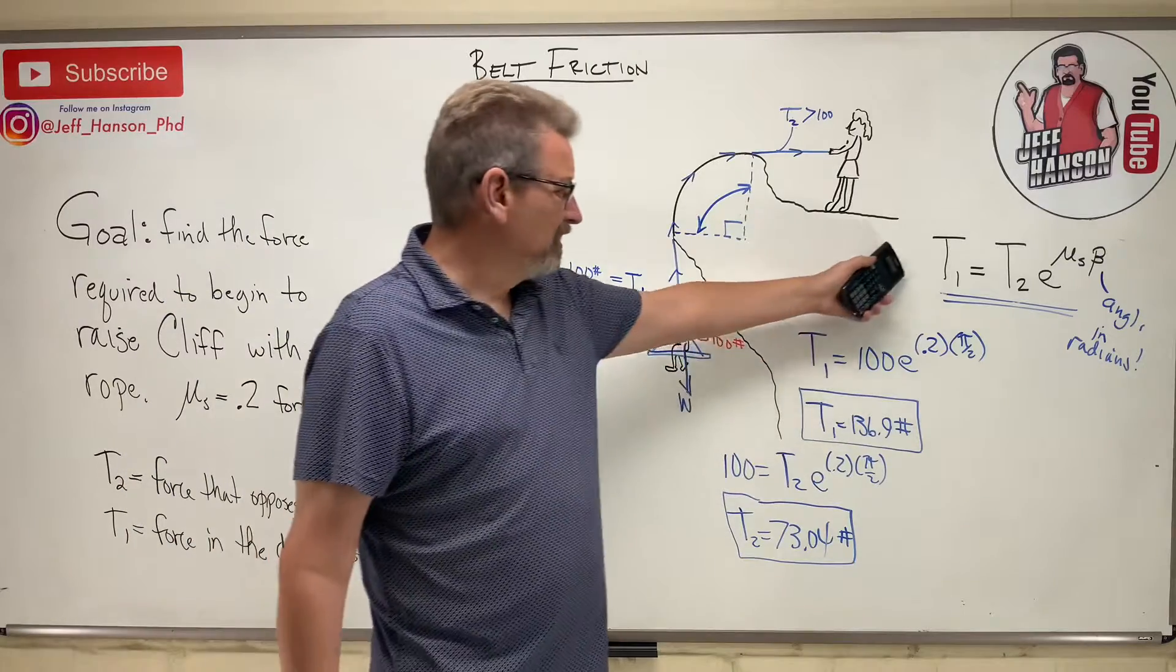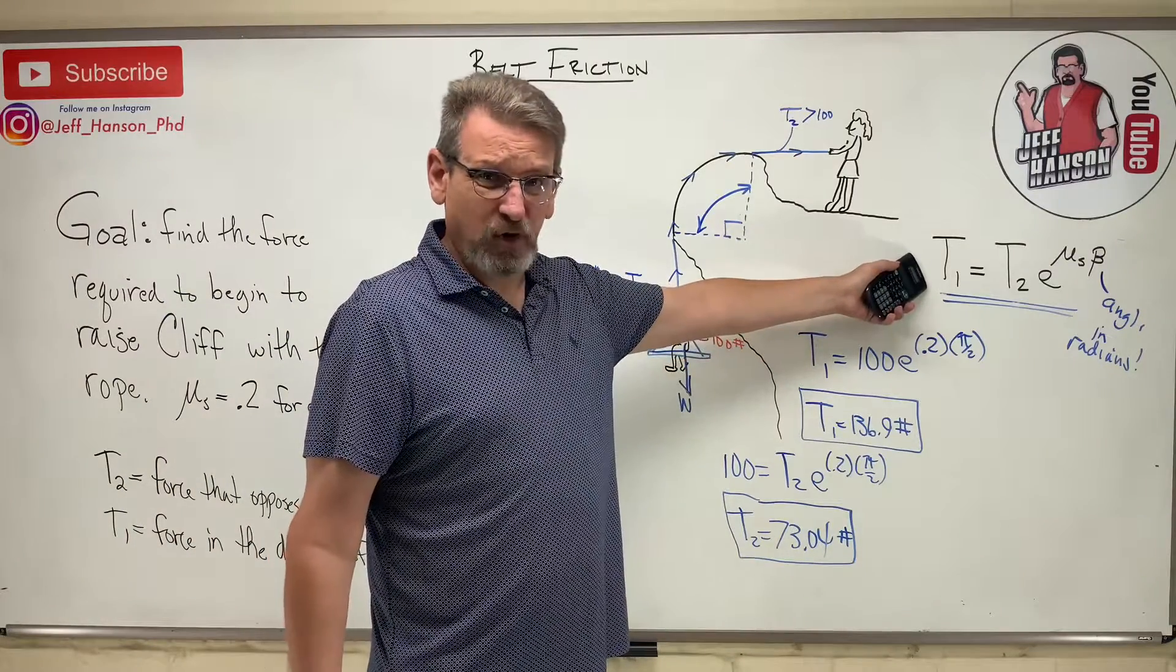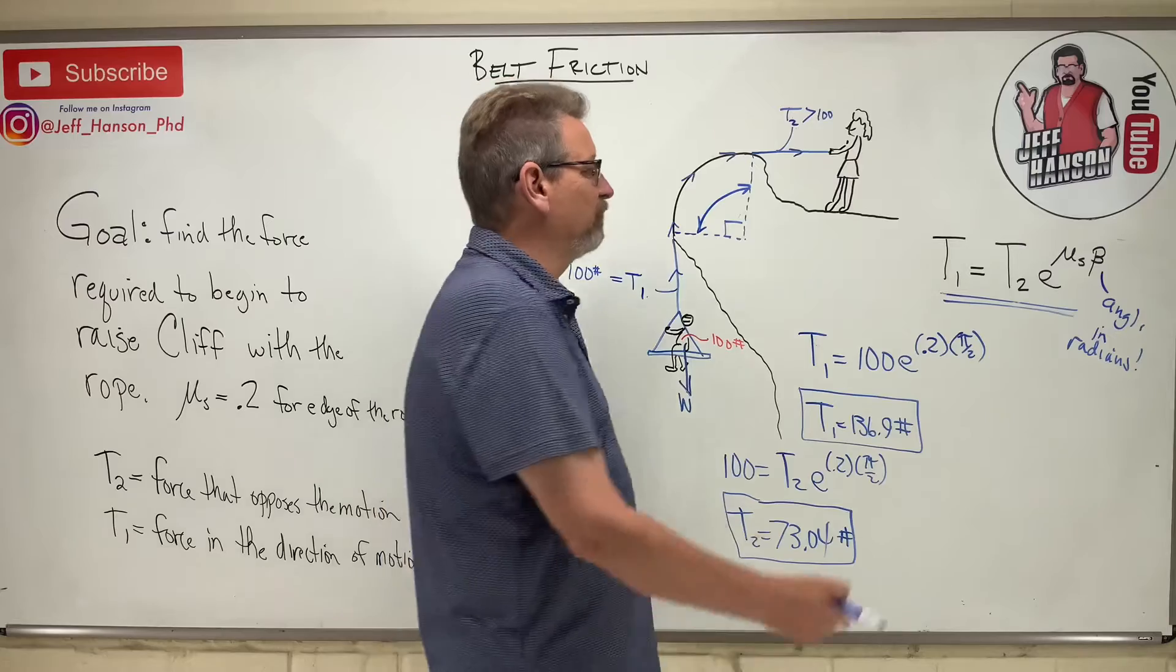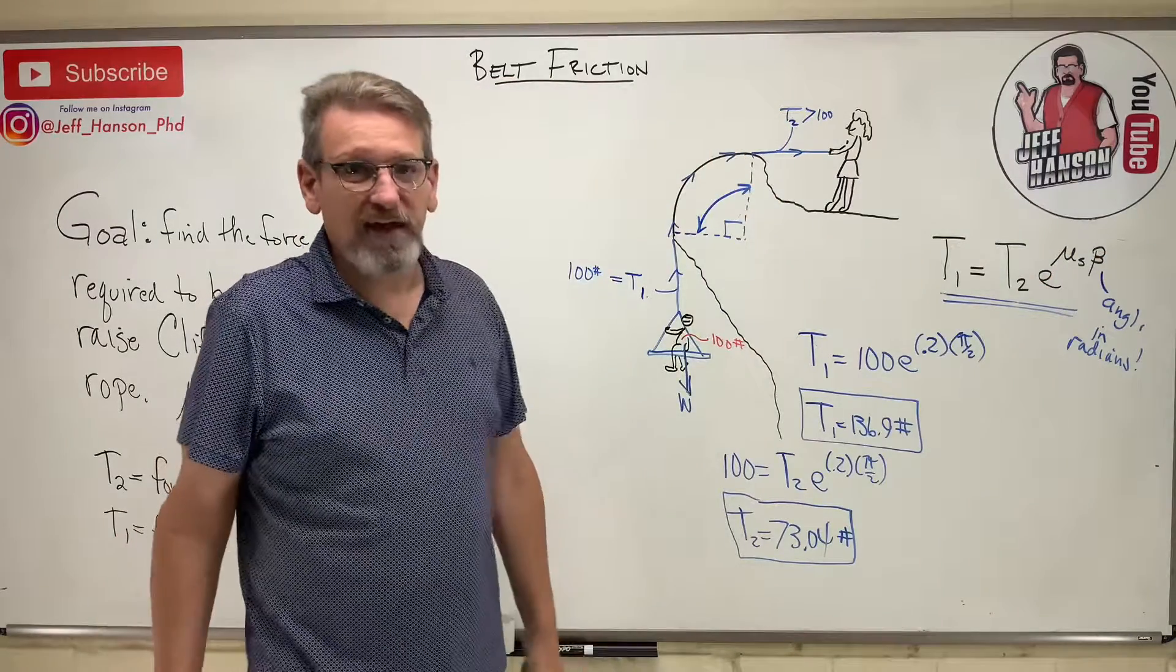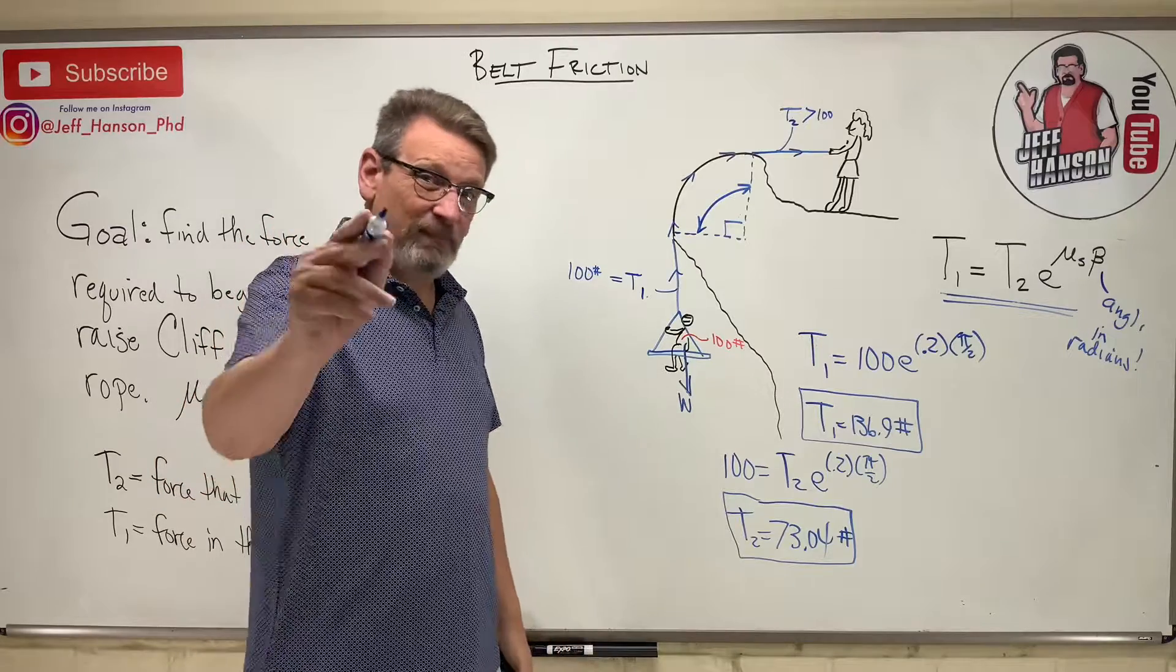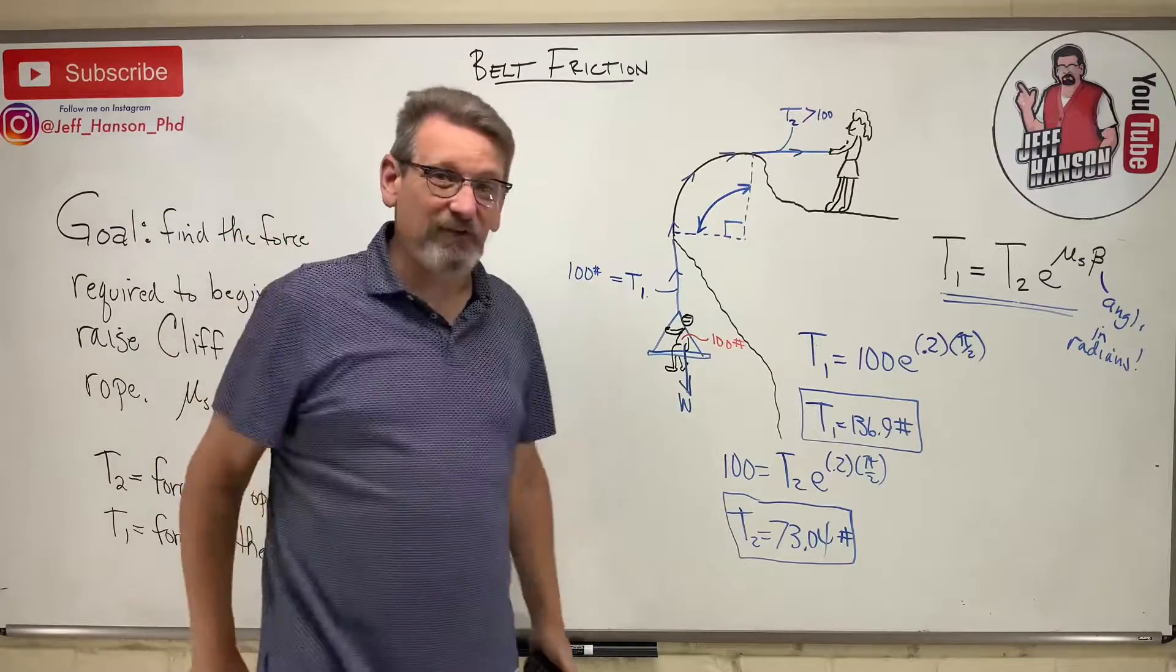So that's how you use the belt friction equation. It's pretty simple. The only trick is remember that that angle right there needs to be in radians. But other than that, pretty straightforward. That wraps up chapter eight. I'll see you on the next video.